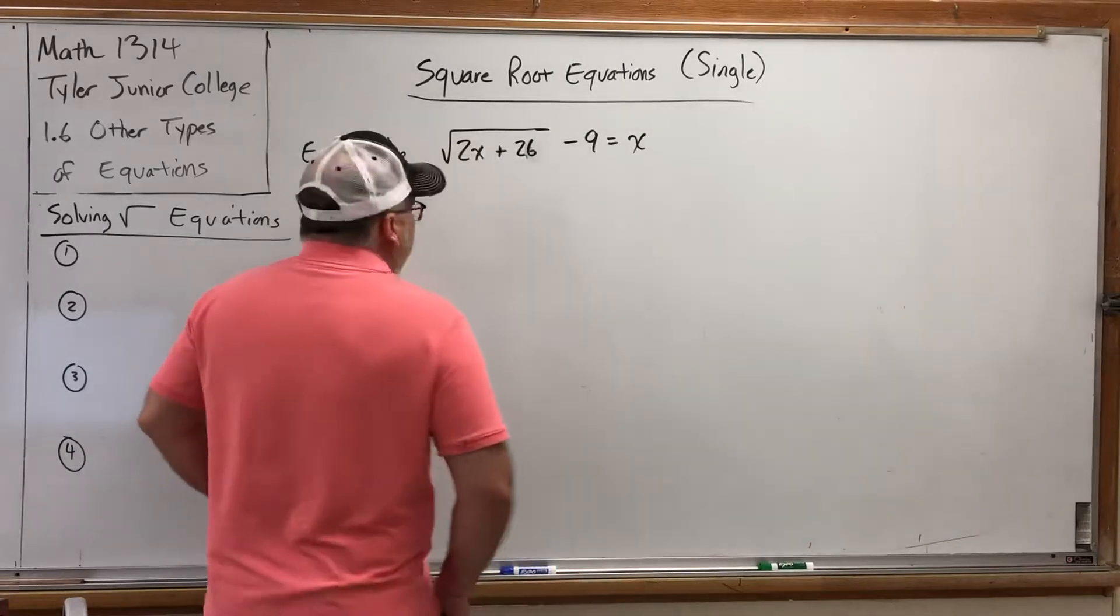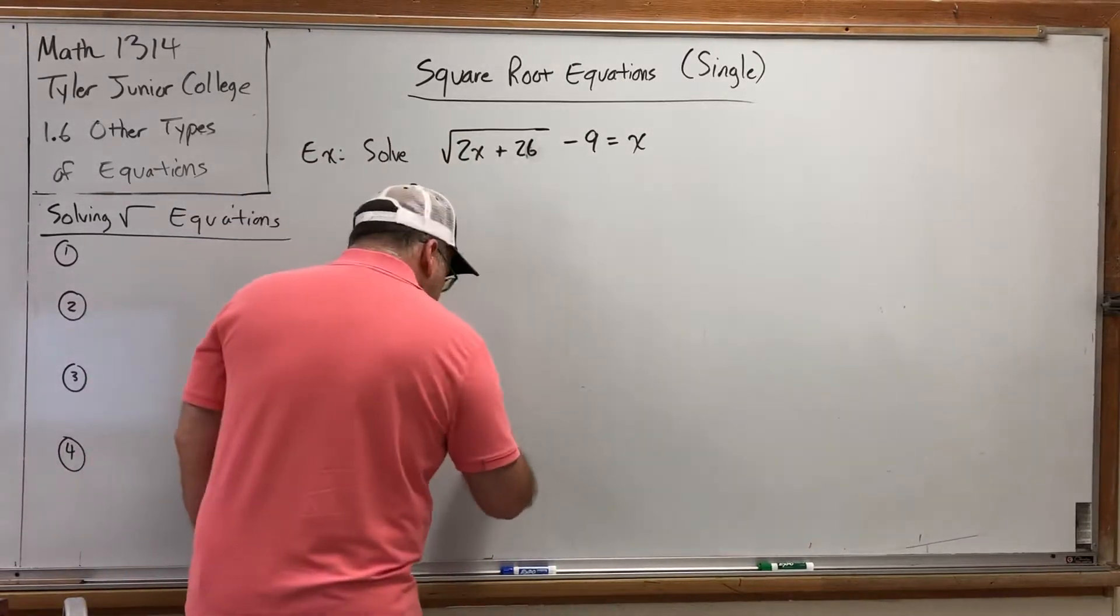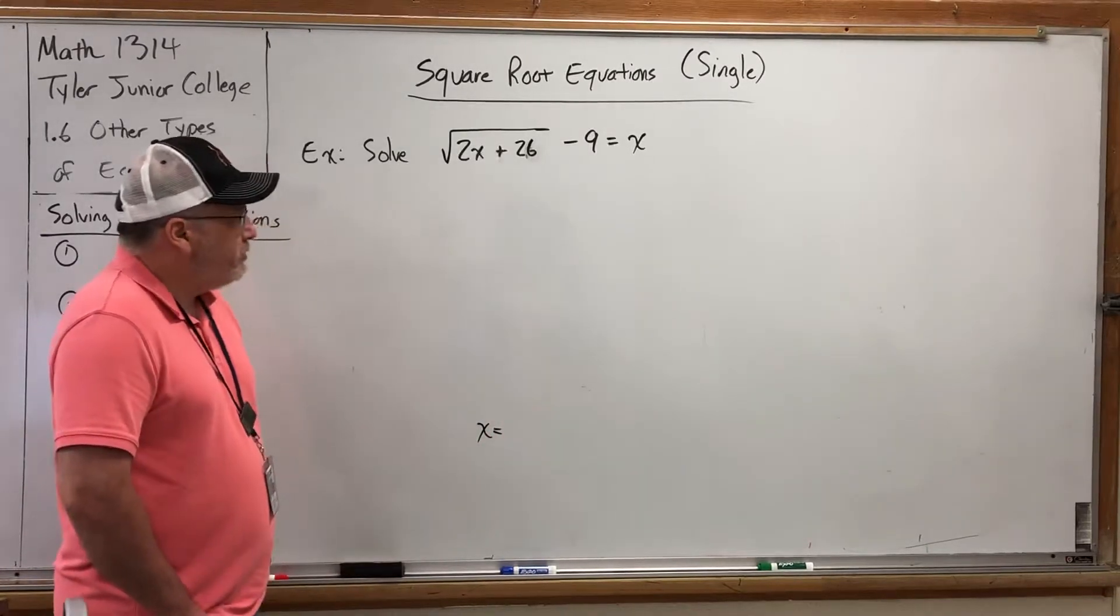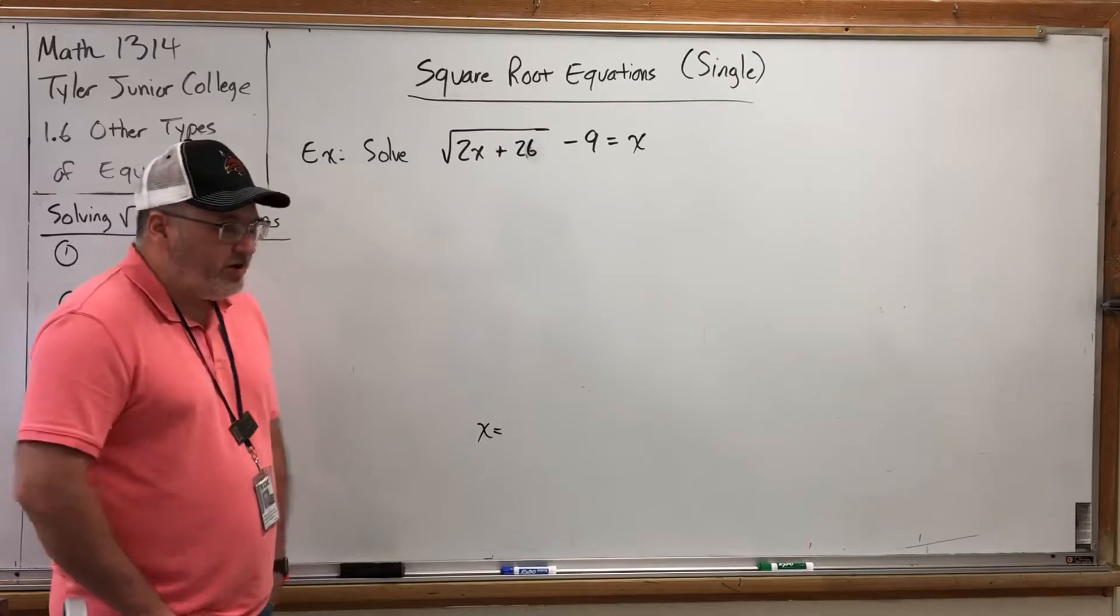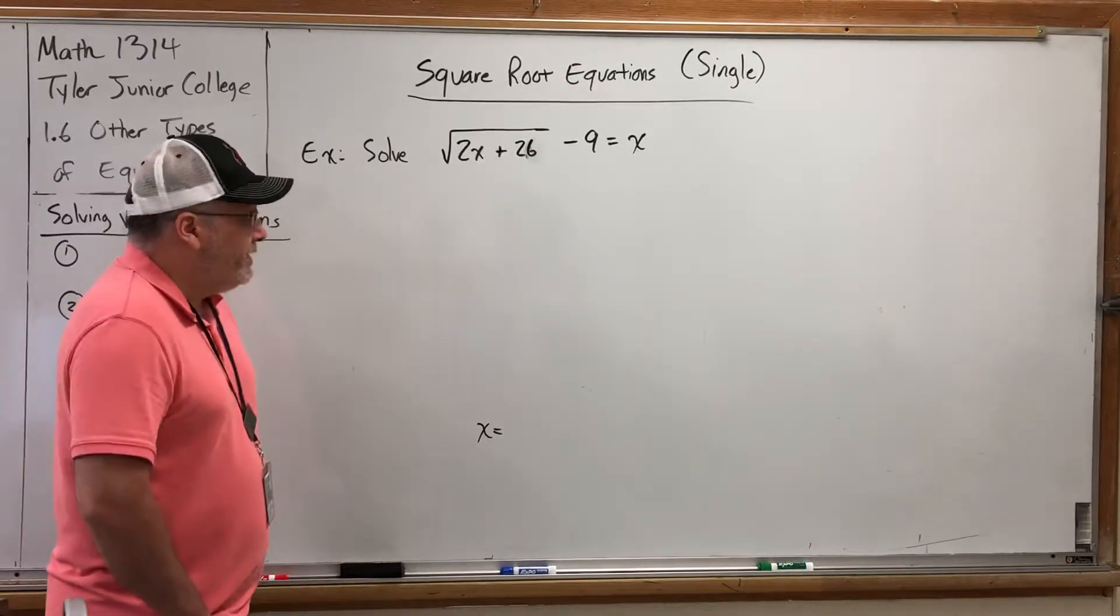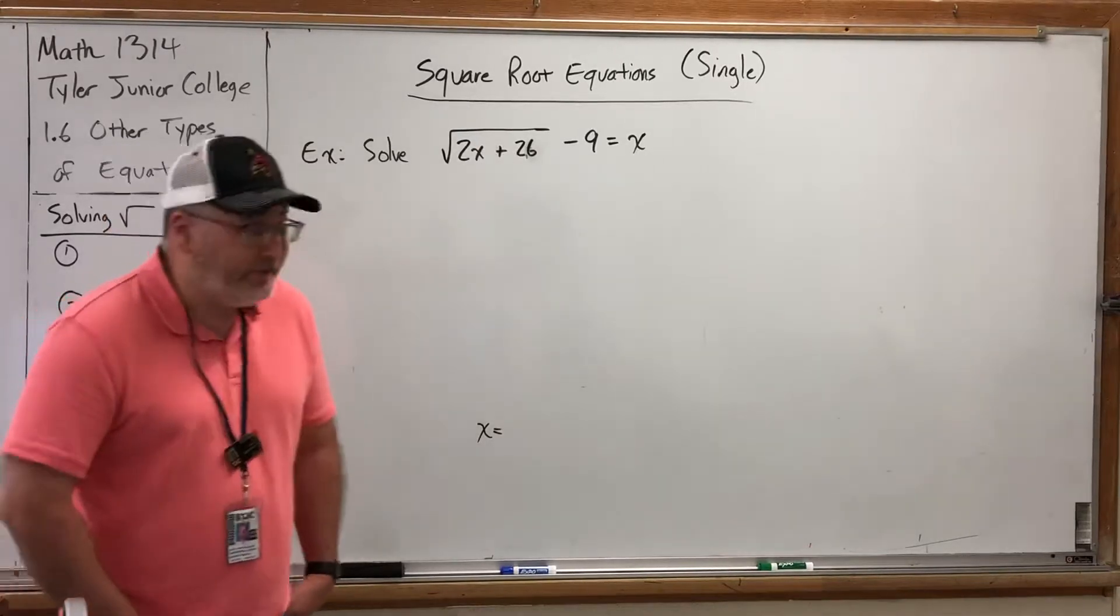The good news is equation solving is always goal-oriented, the goal being get the x by itself. So as you proceed from the beginning to the end, you should ask yourself what's preventing you from that goal. In this case, there's a couple of obvious things. Number one is the square root, so we'll deal with that in a moment.